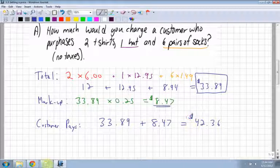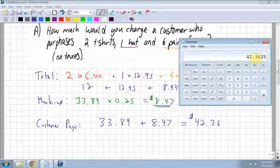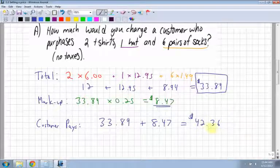Anytime you're dealing with money, always round to the nearest hundredth, which is tenths, hundredths, so the second place. Because you're dealing with money, you want it in cents. Always to the nearest hundredth. The customer pays $42.36.